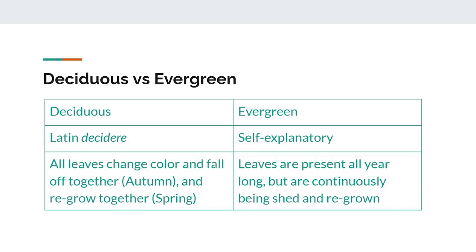Now we'll compare the terms deciduous and evergreen. Deciduous comes from the Latin word 'decidere', meaning to fall down, which is what the leaves of a deciduous tree do every autumn — they change colors and eventually fall off in autumn and regrow in spring. If a tree is evergreen, leaves are present on the tree all year. This is not to say that evergreen trees keep the same leaves forever, as evergreen trees do shed leaves. The difference is that the leaves of evergreens are continuously being grown and shed, not all at once, which makes evergreen trees appear green throughout the year.